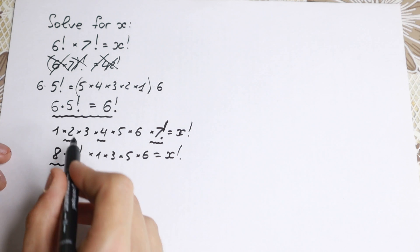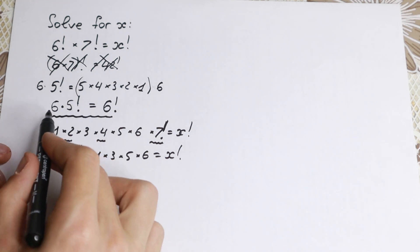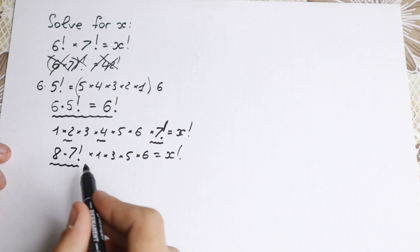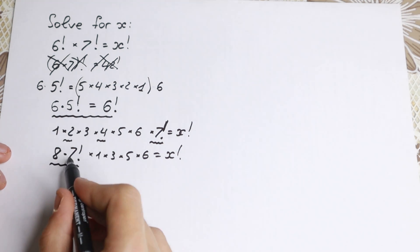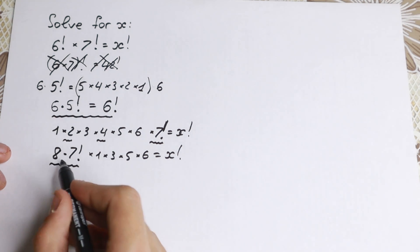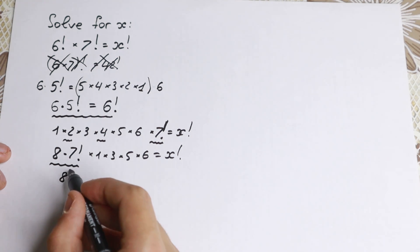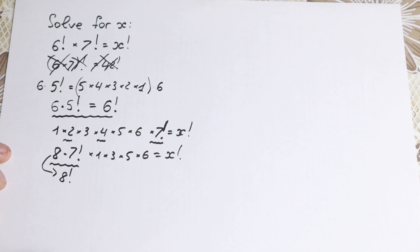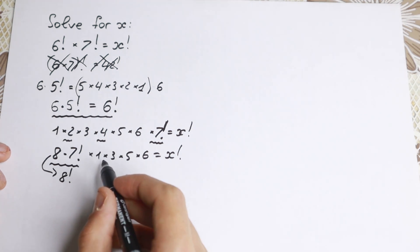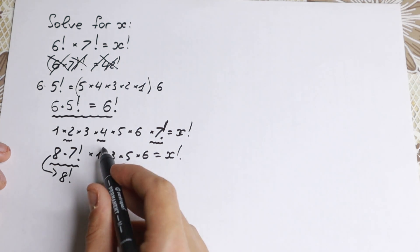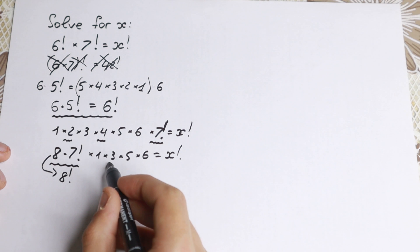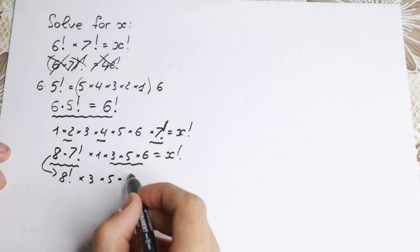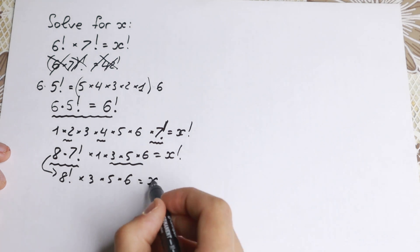Using the same identity — 8 times 7 factorial equals 8 factorial, since that's the product from 1 to 8. So we can replace that with 8 factorial. We can drop the 1, leaving us with 8 factorial times 3 times 5 times 6 equals x factorial.